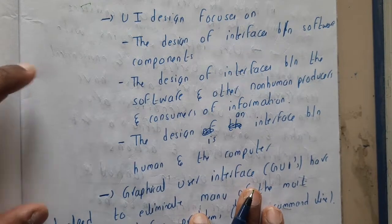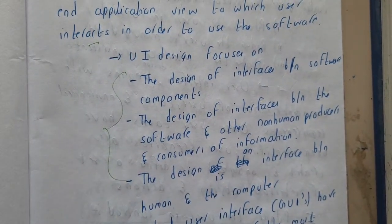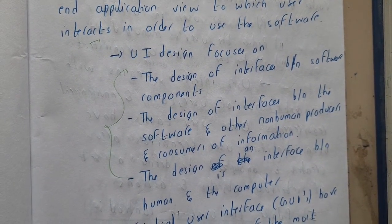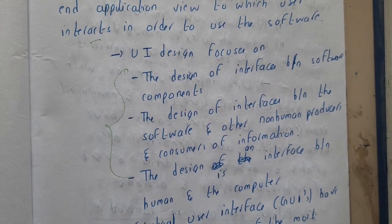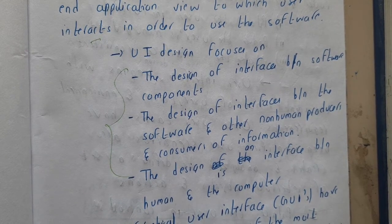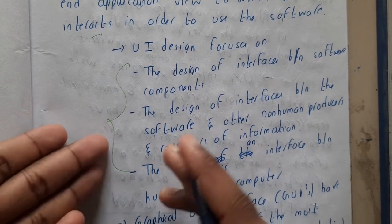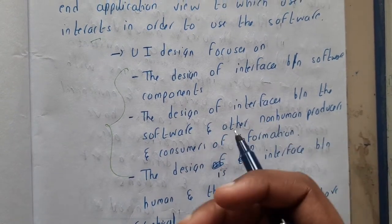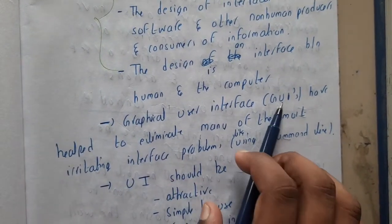UI is the user interface which is developed for Android applications, websites, and any kind of applications. It should be user-friendly and attractive. Graphical user interface, that is GUI, has helped to eliminate many of the most irritating interface problems, like using the command line.